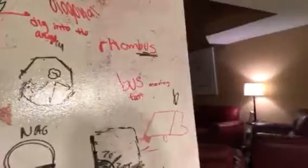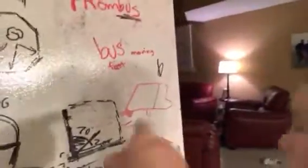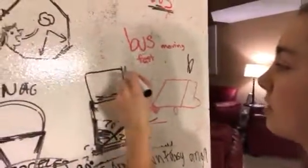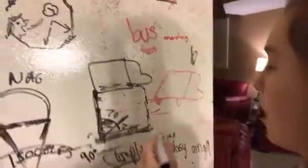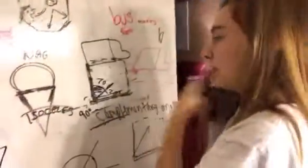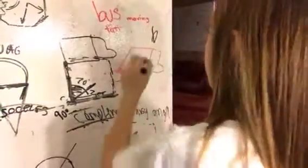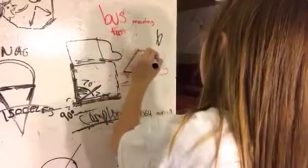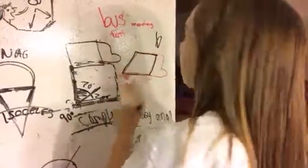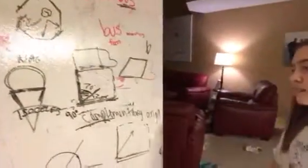Rhombus. The rhombus reminded me of a bus. In cartoons, when a car is moving fast, they slant it a little bit to show that it's in motion. So we drew like a little bus, and this is the rhombus. It's a bus in the cartoon version going really fast.